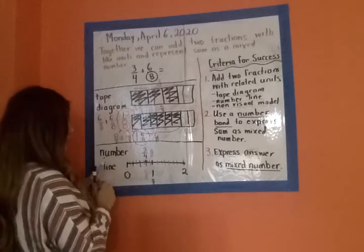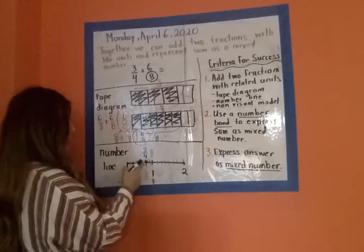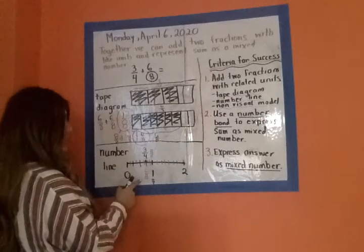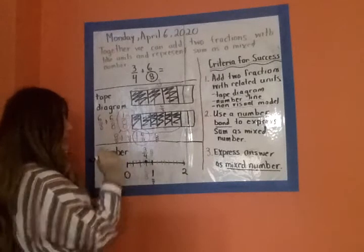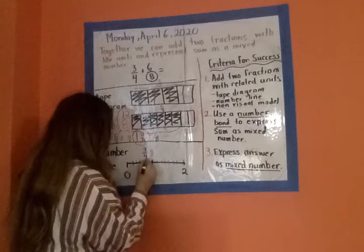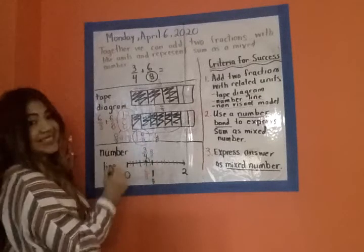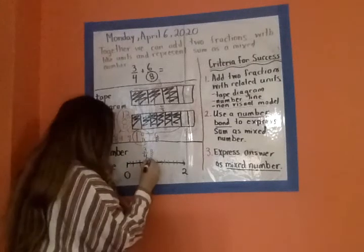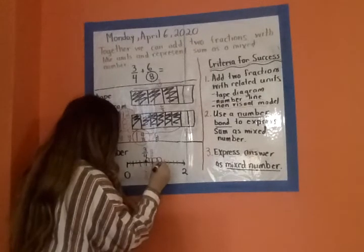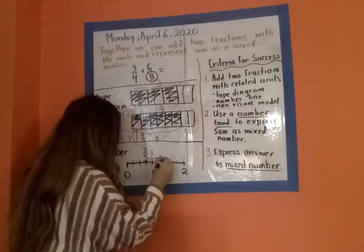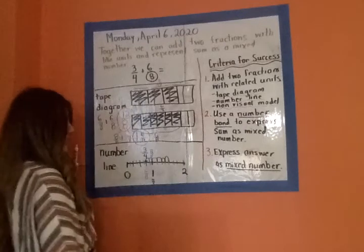And now, for my initial fraction three fourths, which I also said is the same thing as six eighths, I'm going to go forward six eighths. So count with me. One eighth, two eighths, keep going, three eighths, four eighths, five eighths, and six eighths.